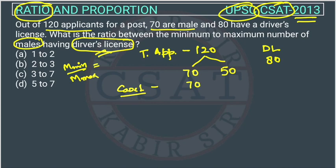What is the remaining? Total are 80 with driving license. So the remaining driving licenses: 80 minus 70 is 10. So 10 women have a driver license. This is the maximum case — the maximum number of males with a driver license is 70.